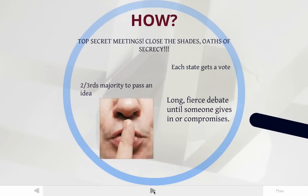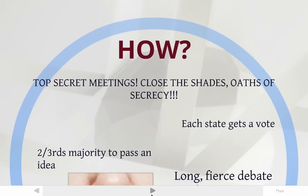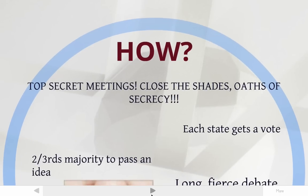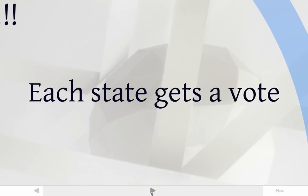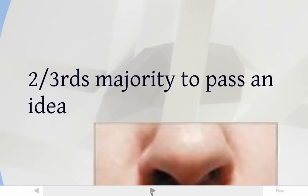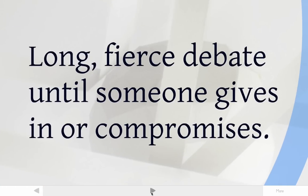Now, how would this happen? How would these 55 people write a new government? The first important thing was secrecy — these meetings were going to be top secret. They closed the shades and everyone took an oath of secrecy. No one would talk about what happened inside, so that people could debate without worrying about being judged. James Madison took notes and published them well after the meeting was over — that's how we know what happened. Back then, not even the newspapers reported on it because nobody knew. Free debate was encouraged. Each state got one vote, and you needed a two-thirds majority — about nine of the twelve states — to pass an idea. There was going to be long, fierce debate, with people arguing over lots of different things until someone gave in or compromised on an issue.